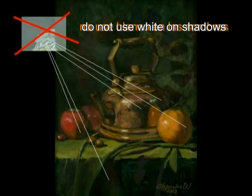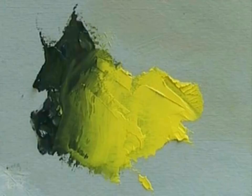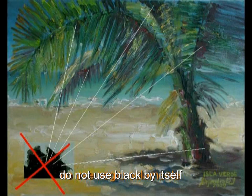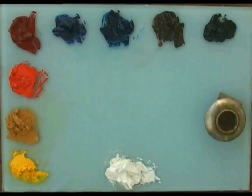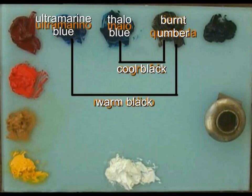Number 2: adding white to the color of the shadows. And number 3: adding too much black. Black tends to kill the life of the colors and should only be used as a local color, and even then, never by itself. You can mix black colors with burnt umber and either ultramarine blue or thalo blue in different proportions to obtain cool or warm black colors.